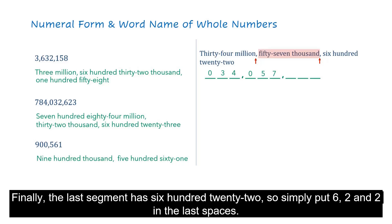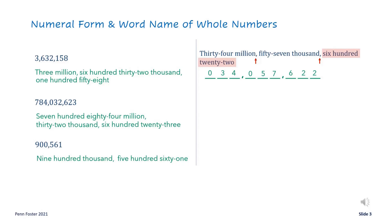Finally, the last segment has six hundred twenty-two. So simply put 6, 2, and 2 in the last spaces.